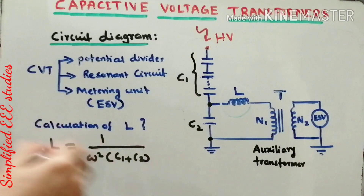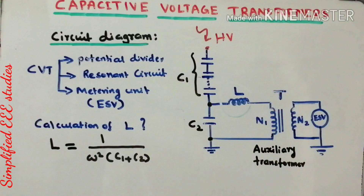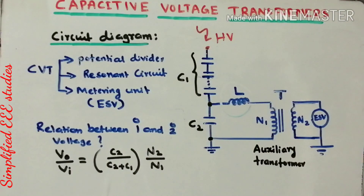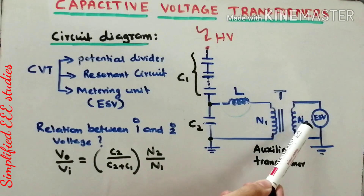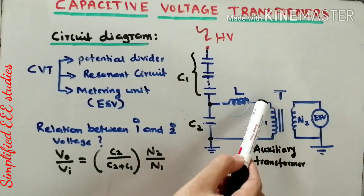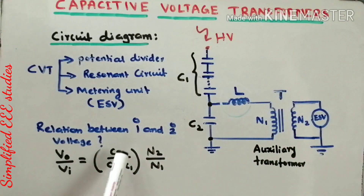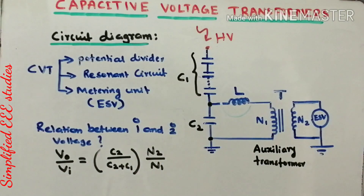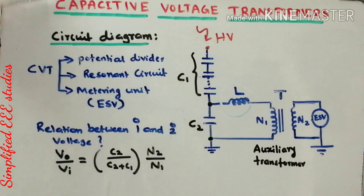There is also a relationship between the primary and secondary sides of the transformer: V0 / VIN = [C2 / (C2 + C1)] × (N2 / N1), where N2/N1 is the turns ratio. The value of C2 / (C2 + C1) will be less than 1. This relation between the primary and secondary sides of the auxiliary transformer is helpful for designing a CVT in a power system.